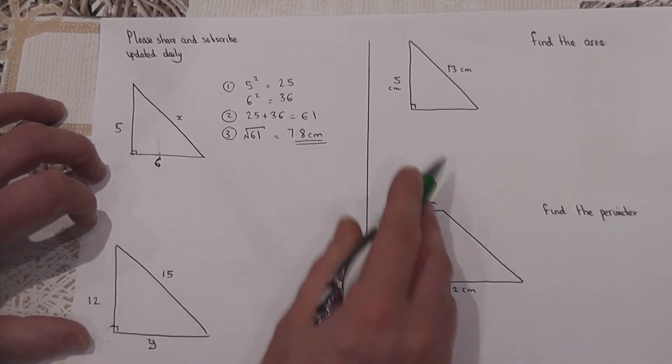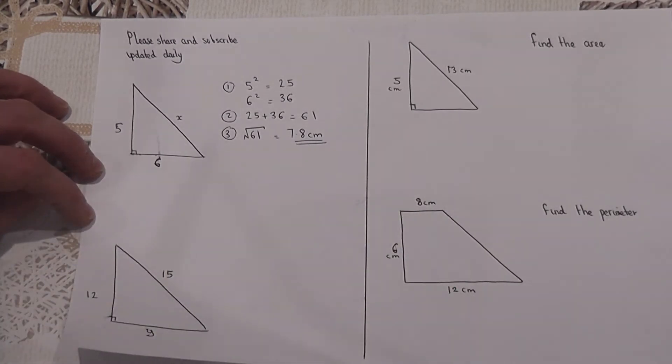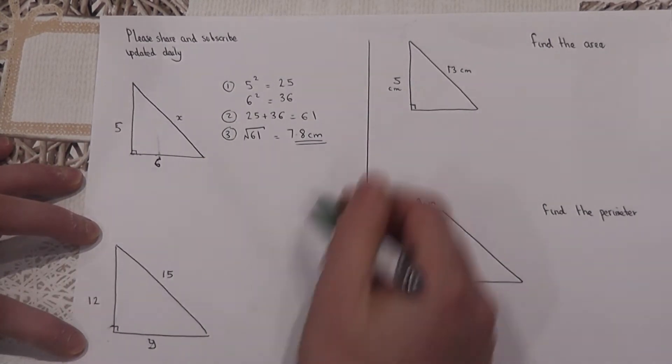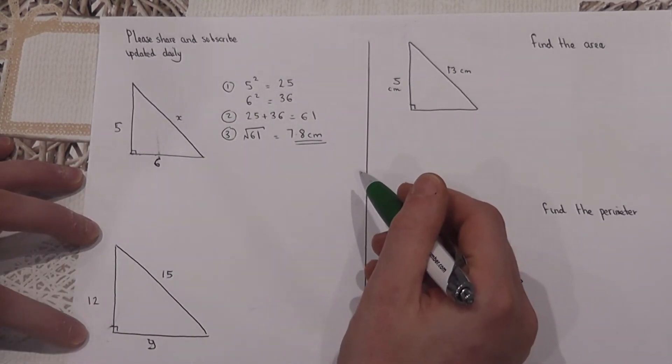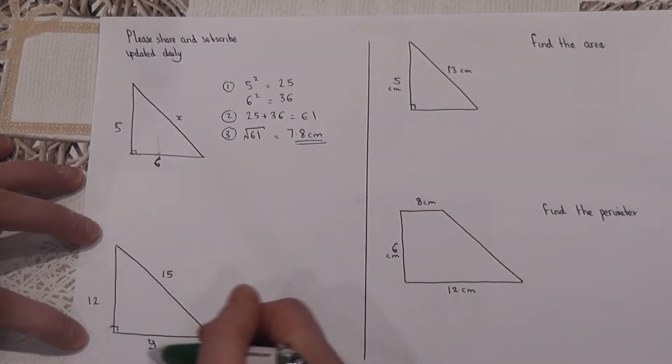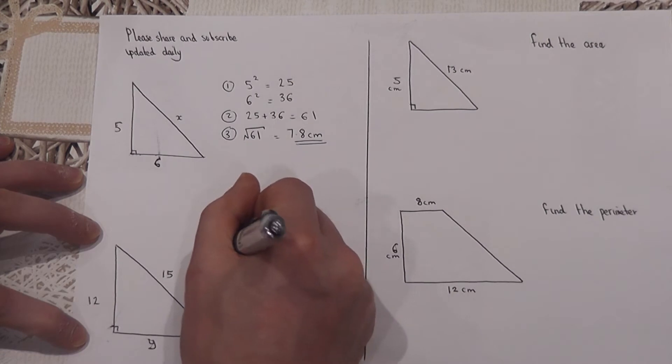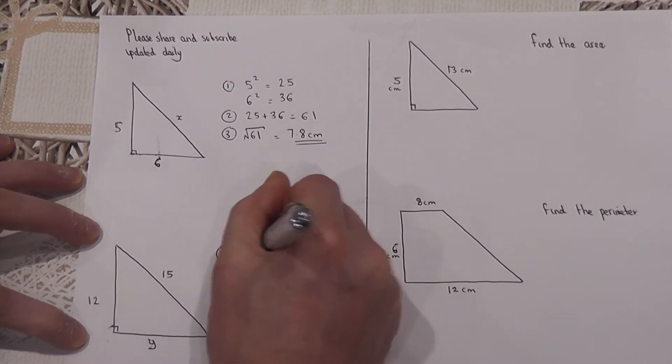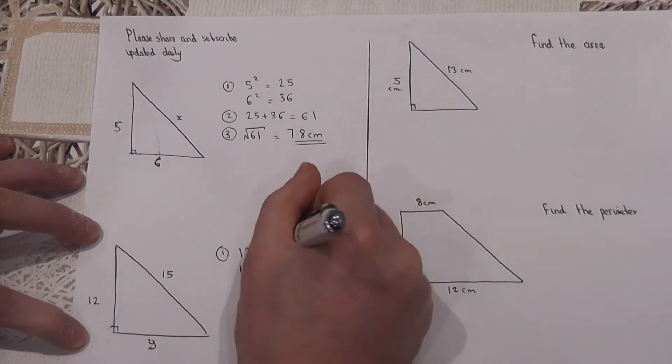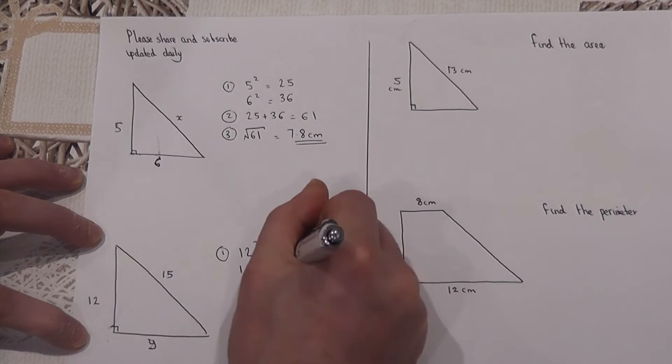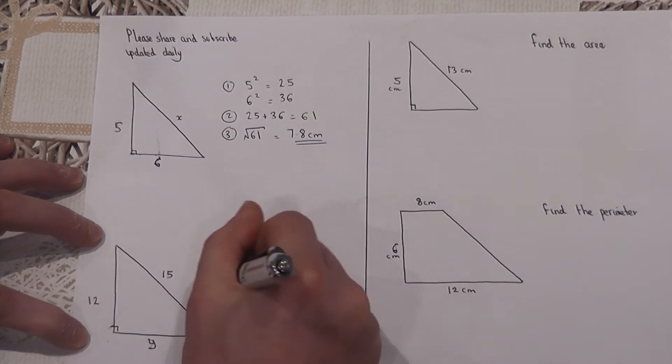In the second example we know the length of the hypotenuse and we're asked to find the length of one of the other two sides. We begin this in the same way, we still square the two sides: 12 squared is 144, 15 squared is 225.